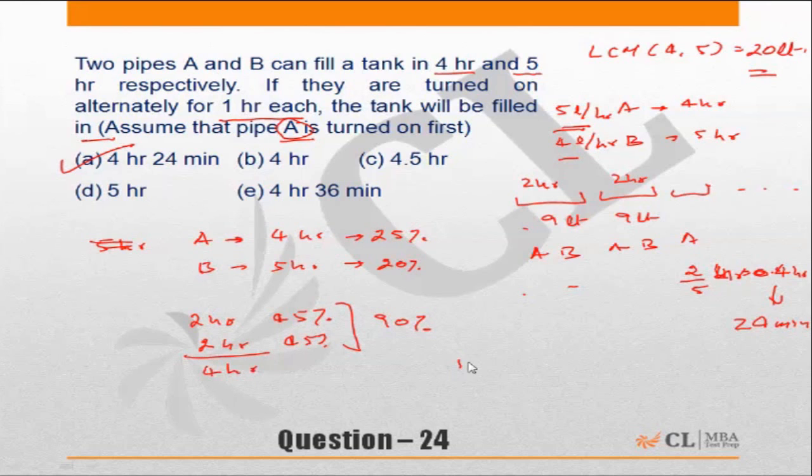Balance is 10% of the tank, which has to be filled in by A. Since A fills in 25% of the tank in an hour, it will take 40% of an hour.